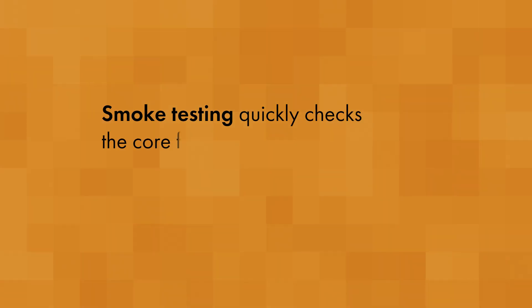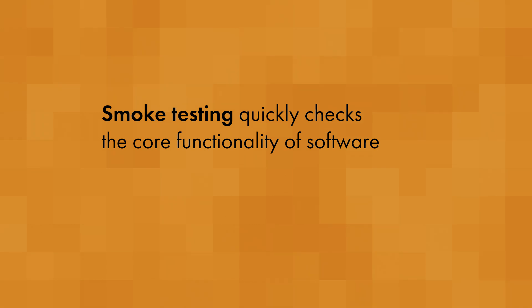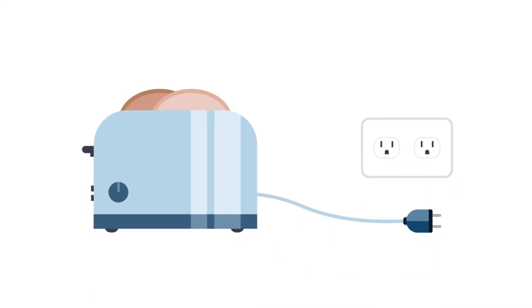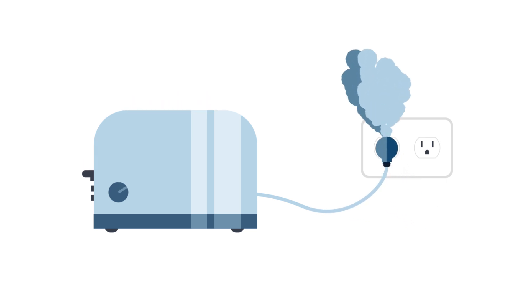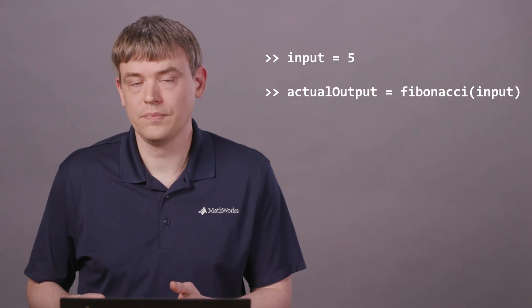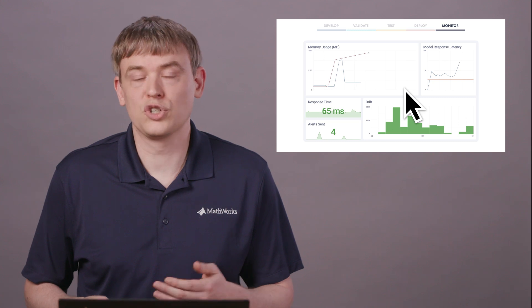Smoke tests are a fast and easy way to check the basic functionality of software. They verify that the most critical features work and that the software is ready for additional testing. The term smoke testing comes from electronics, where an easy way to test for major problems is to power on a device and see if it starts smoking. In software development, a smoke test is the most basic method to execute the core function of your software. If it's a script, run the script. If it's a function, call it with basic inputs. If it's an app, launch the app. If that doesn't error, the smoke test passes.